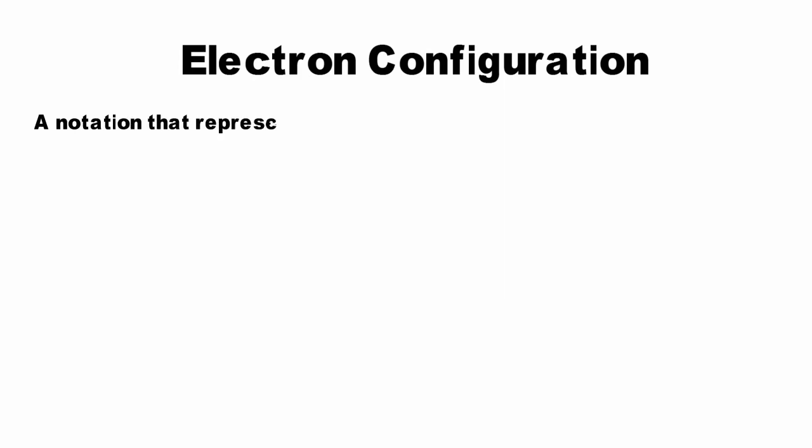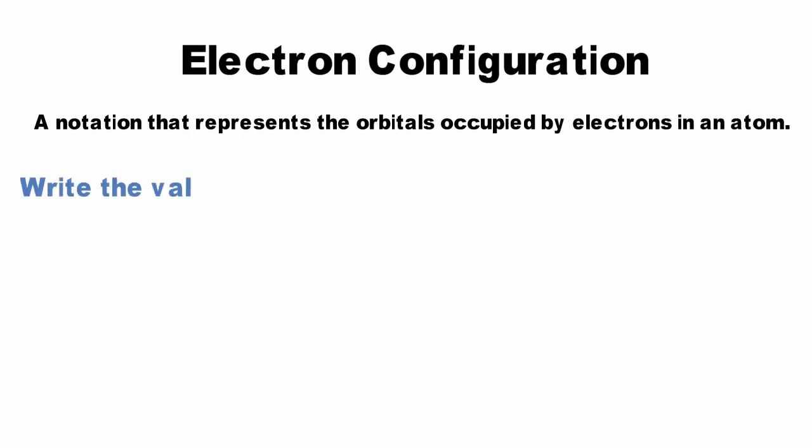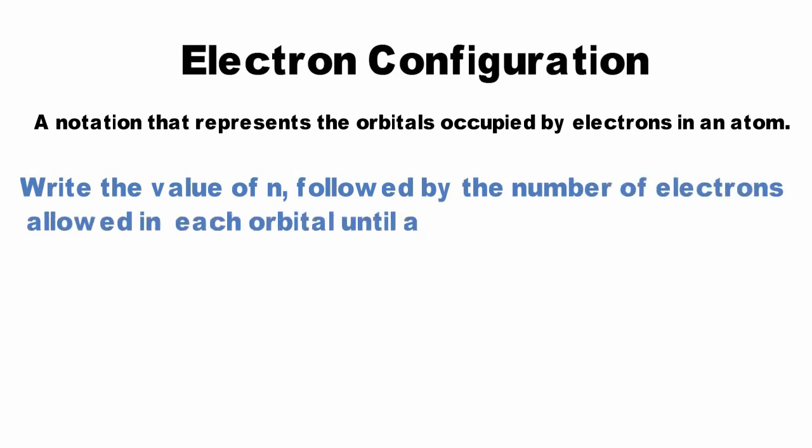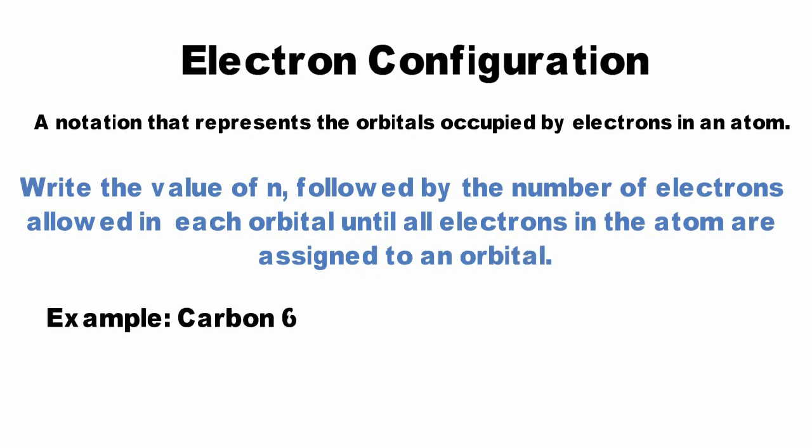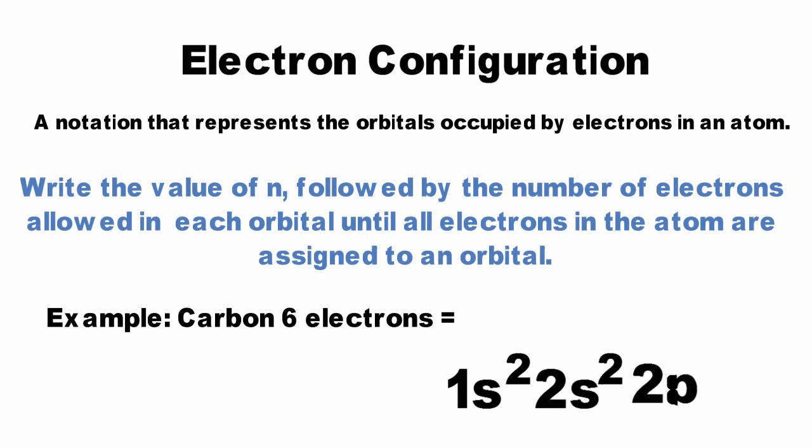There are two ways we can use these rules to describe electrons in an atom. The first is electron configuration, a description of which orbitals are occupied by electrons in an atom. To write an electron configuration, start by writing the value for n, followed by the letter value of L, then, as a superscript, the number of electrons that can be in each type of orbital. In carbon, an atom with six electrons, the electron configuration is 1s2, 2s2, 2p2.